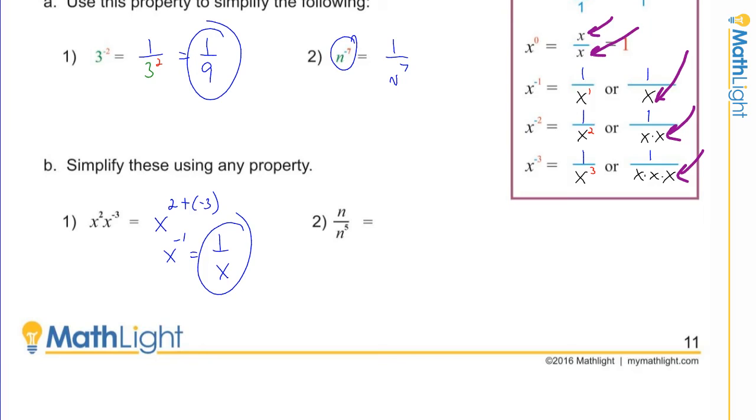All right, how about number two? Now you got to go to the division property. x to the a divided by x to the b equals x to the a—what's the exponent of that top number? It's not shown, it's a one minus the bottom. So you end up with n to the one minus five. Make sense? And we all know that that's n to the negative four. One positive five negatives leaves you four negatives. Do we leave our answer like that? We do not. We have to give it a positive exponent. We end up with one over n to the fourth.